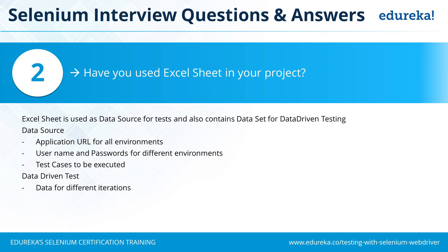Your code executes each row as one data set, puts it into the application, and runs the test case. The functional flow is the same for each iteration — only the data differs. That is the particular use of Excel sheet for data-driven testing.